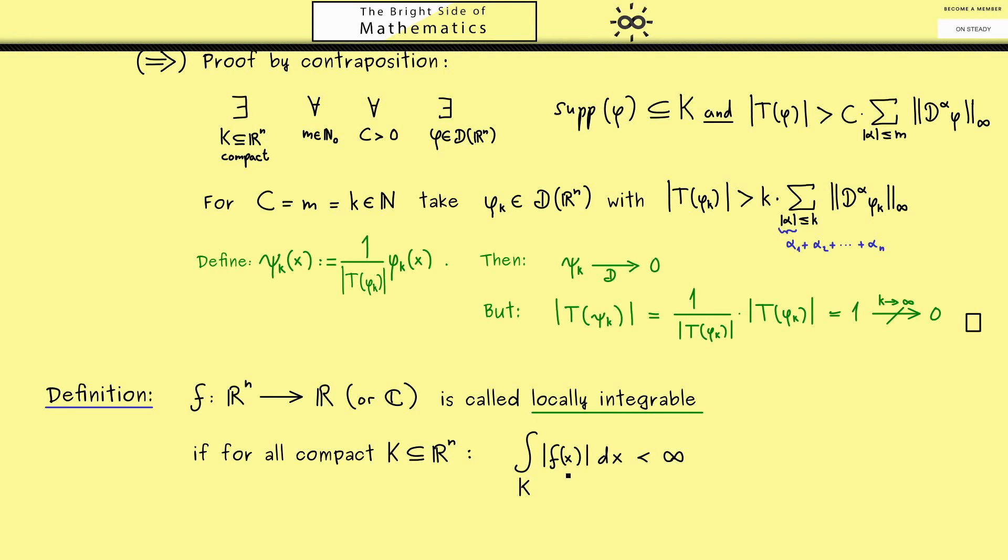When you know how to deal with Lebesgue integrals, it will make your life much easier here. Because you know you need a measurable function f and the integral should be finite. However, it is also possible to think of a normal Riemann integral here and do everything with the Riemann integral. But then, of course, we don't get out the full general result. Therefore I would say knowing some measure theory and the Lebesgue integral is indeed helpful here in the theory of distributions.